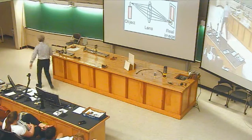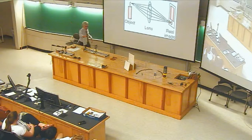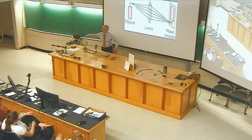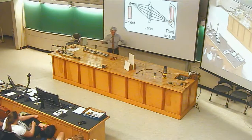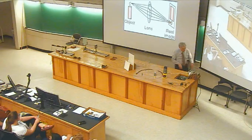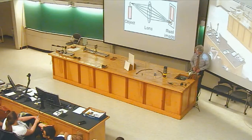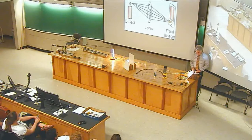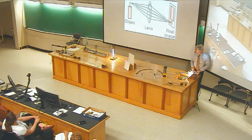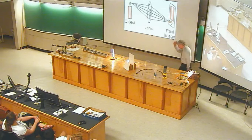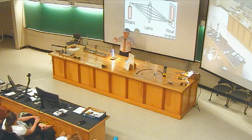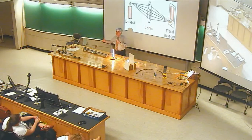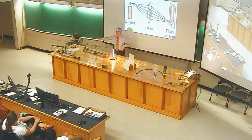Let me show you this with the optical table here. There's one lens and a screen to project an image onto — an image of these three lamps, which I'll turn on. All three are on. So we're going to take a photograph of this lamp, that lamp, that lamp — they're all at different distances from the lens that's going to do the imaging.